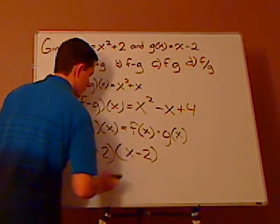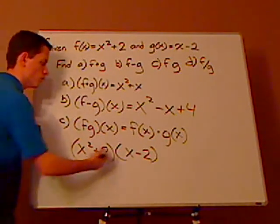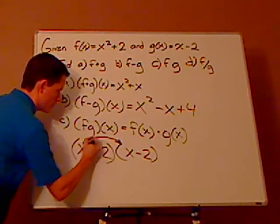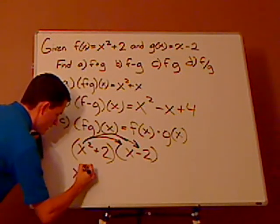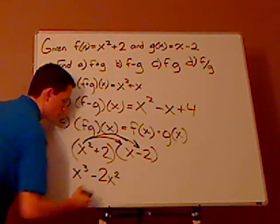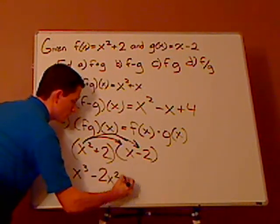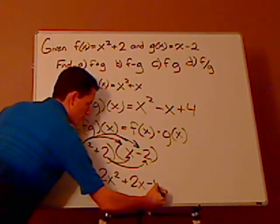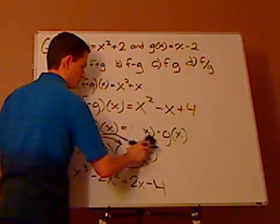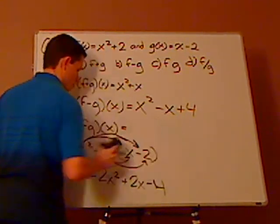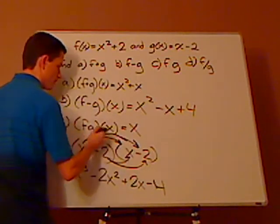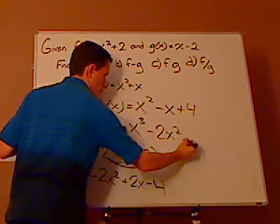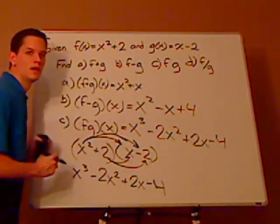It becomes a foiling problem — multiplying two polynomials using the distributive property. x squared times x gives x cubed, x squared times negative 2 gives minus 2x squared. Then distribute the 2: 2 times x is 2x, and 2 times negative 2 is negative 4. So f times g of x equals x cubed minus 2x squared plus 2x minus 4.